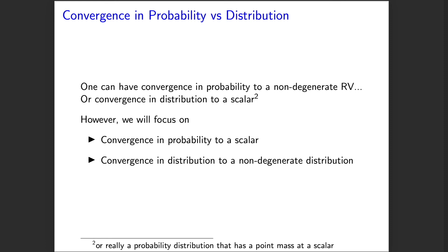Now, you could have convergence in distribution to a constant, and you can have convergence in probability to a non-degenerate random variable, but for our purposes, we are generally not going to engage with the two in that way.